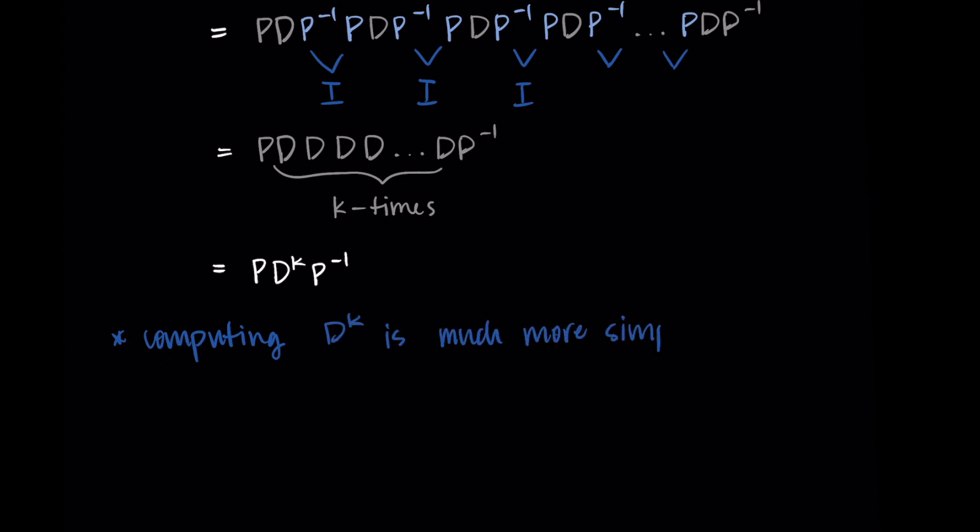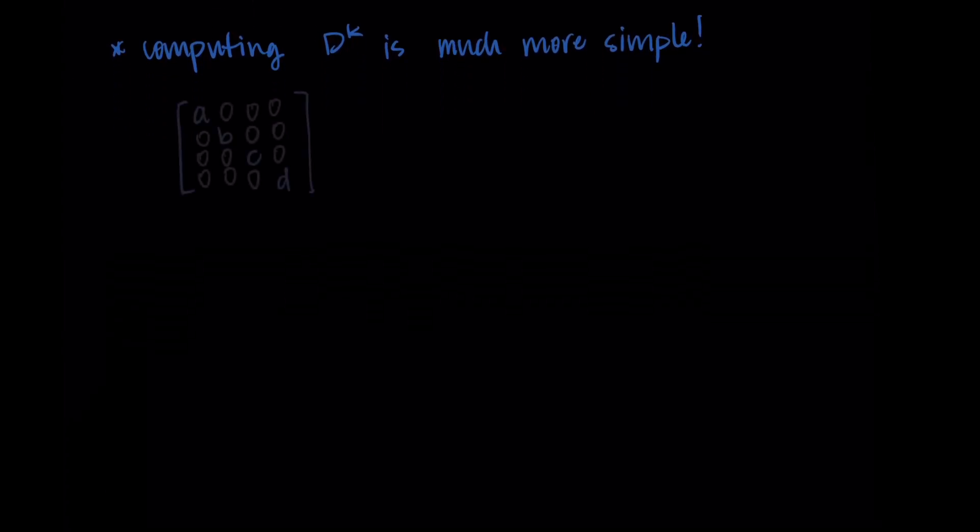If we have D, and let's say in a four by four case, it's diagonal with entries A, B, C, D on the diagonal and everything else zeros, let's first square D. Doing this computation will hopefully illustrate how much easier D to the kth power can be.